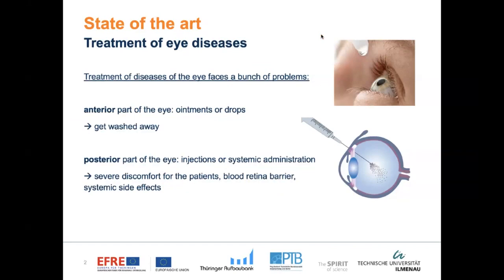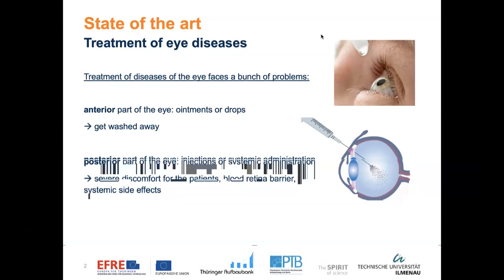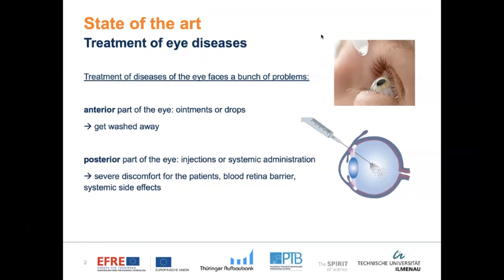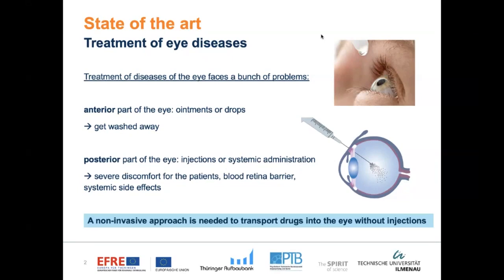If you have a disease of the eye, you have two different options. If you have a disease of the anterior part of the eye, for example at the cornea, you can use ointments or drops to treat this. But the problem is that most of the drugs will get washed away by the tears and only a very small proportion ends up in the eye. It becomes more complicated if you want to treat the posterior part of the eye, for example the retina. In this case, you can only do an injection or systemic administration of the drug, which is connected to several discomforts for the patient and also systemic side effects. So we need a non-invasive approach to transport the drugs into the eye without any injections or invasive methods.